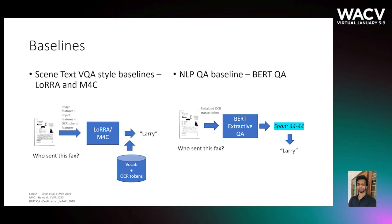Both LoRa and M4C make use of image features, the features of objects in the images, and also the features of the OCR tokens recognized from the images. Answers are picked from a fixed vocabulary or a dynamic vocabulary built from the tokens recognized from the images.